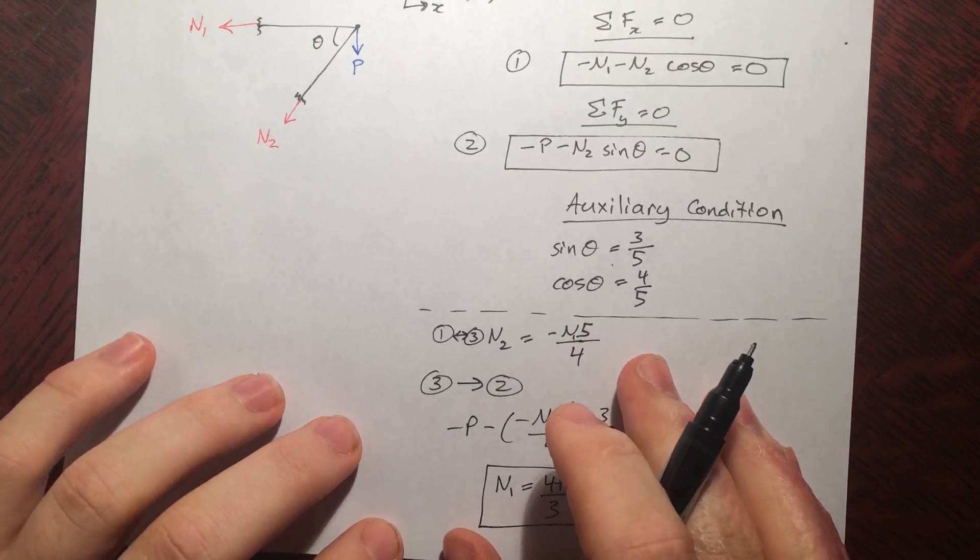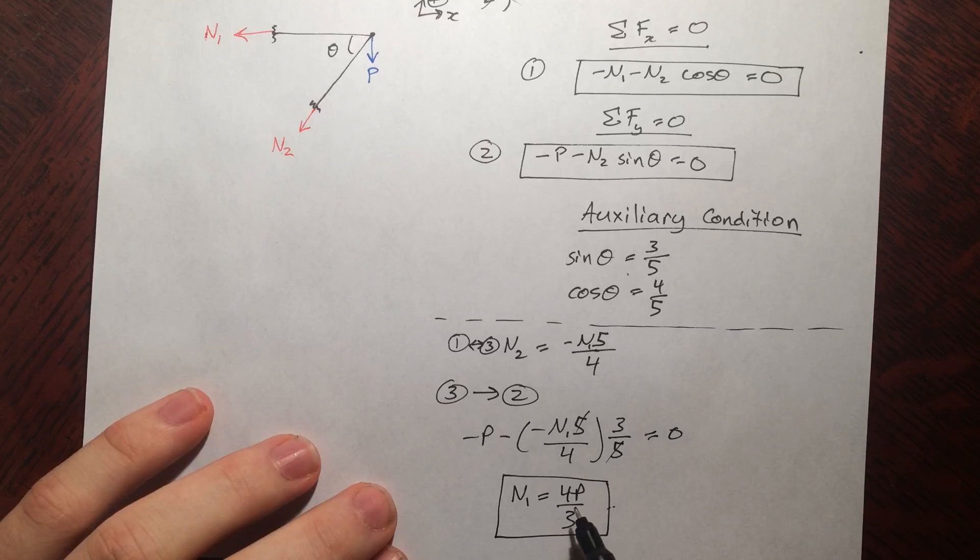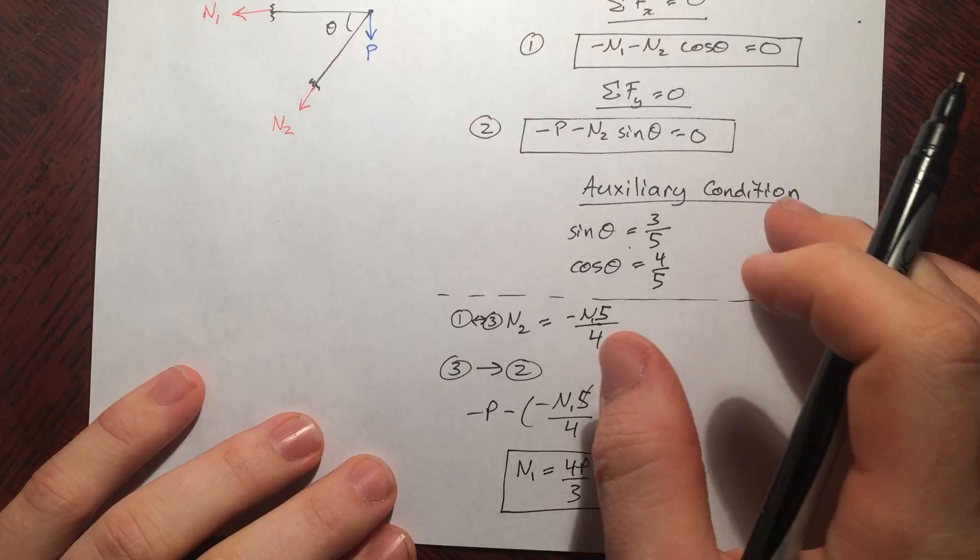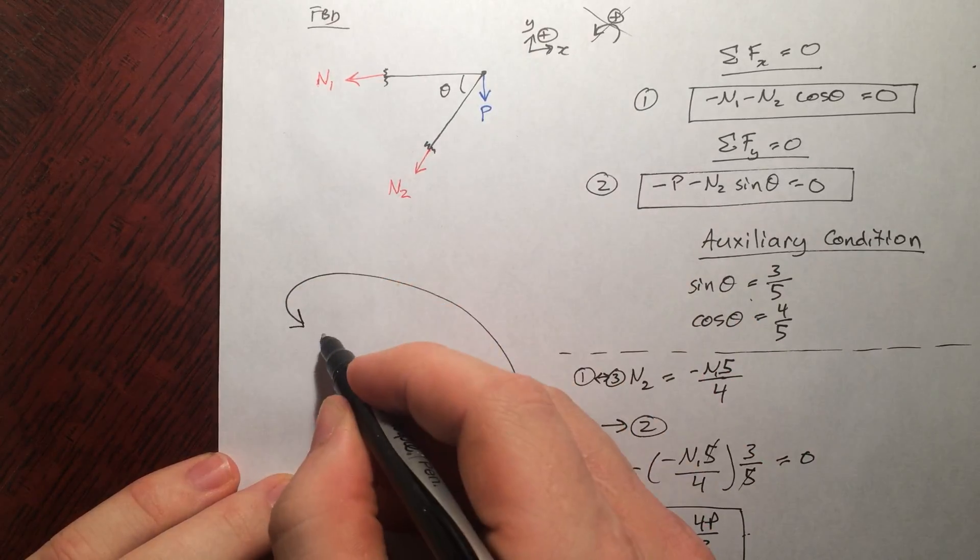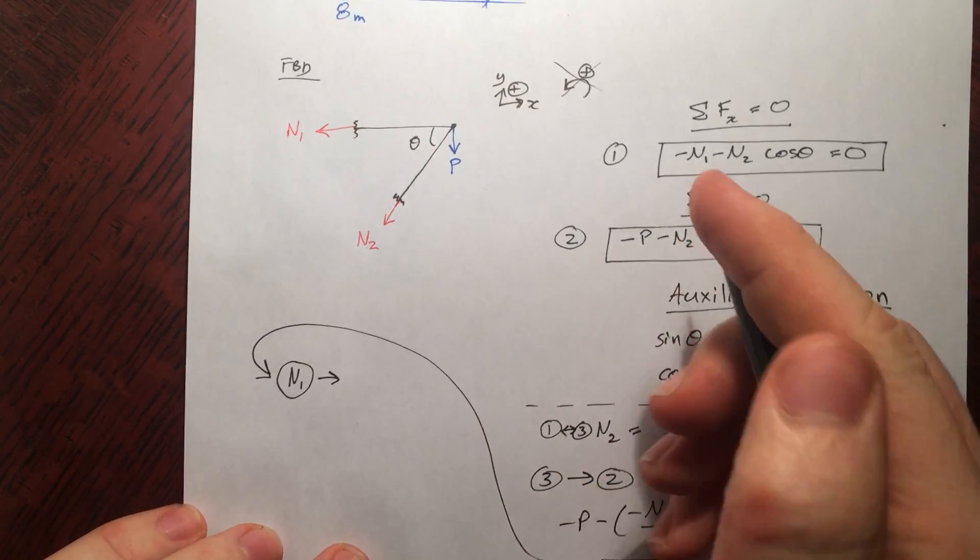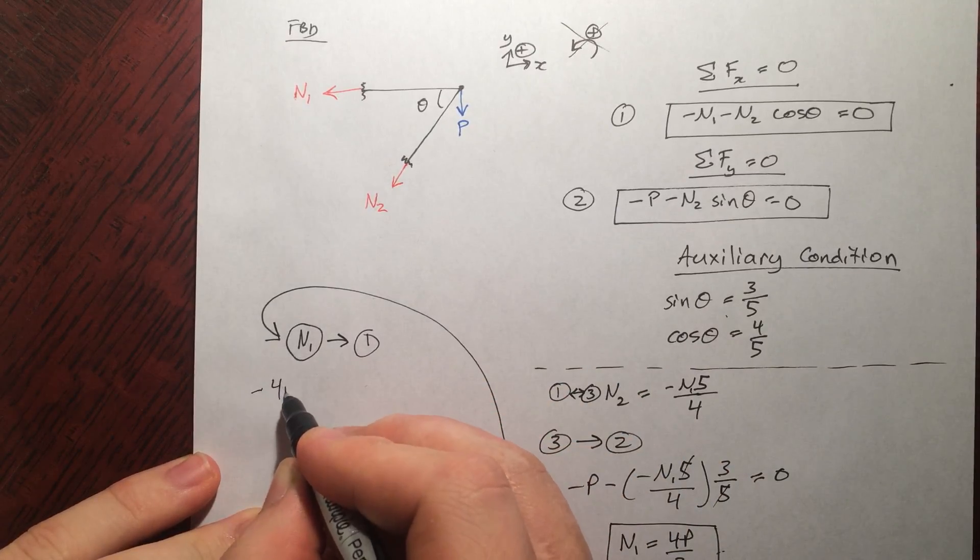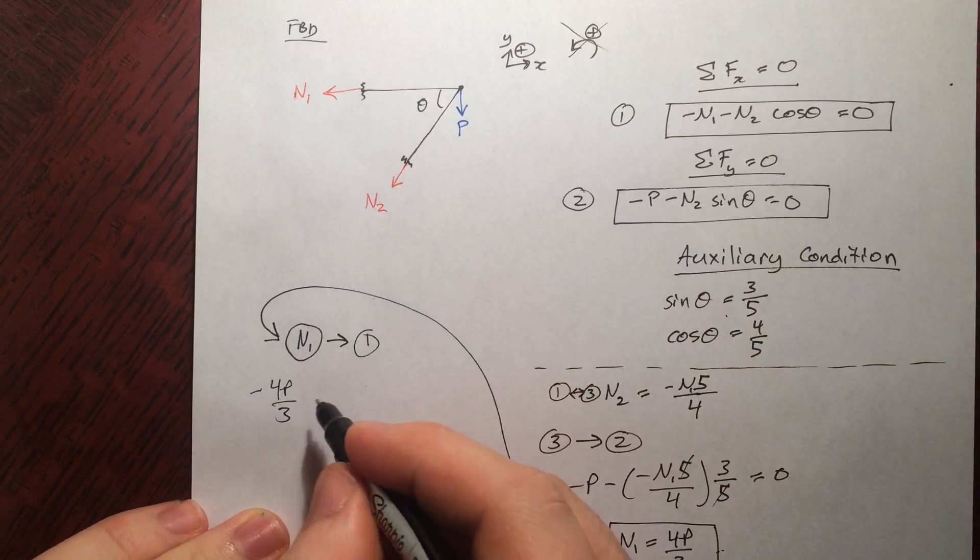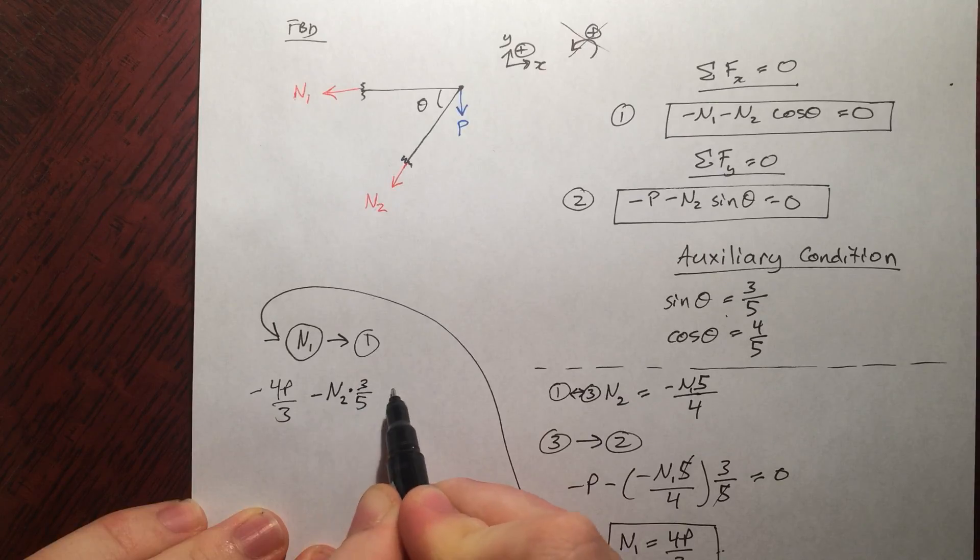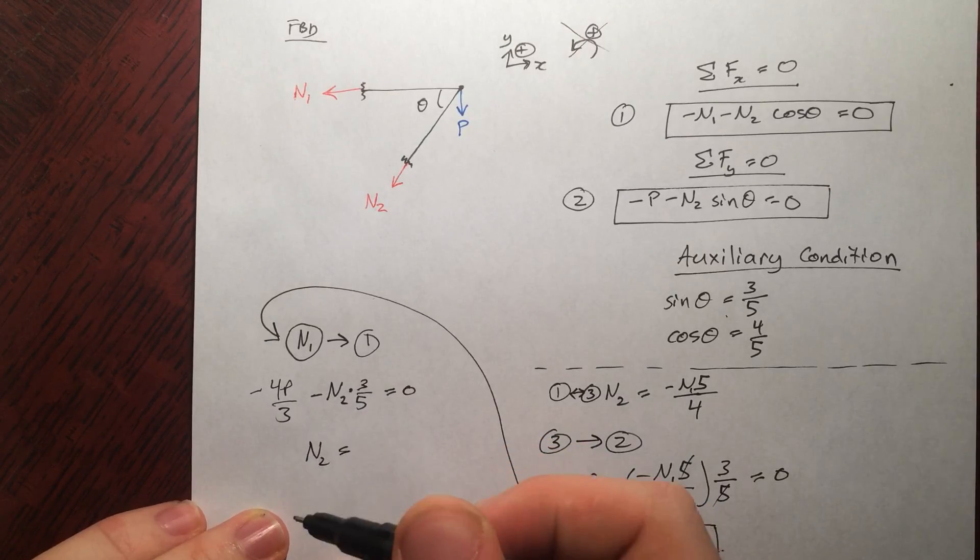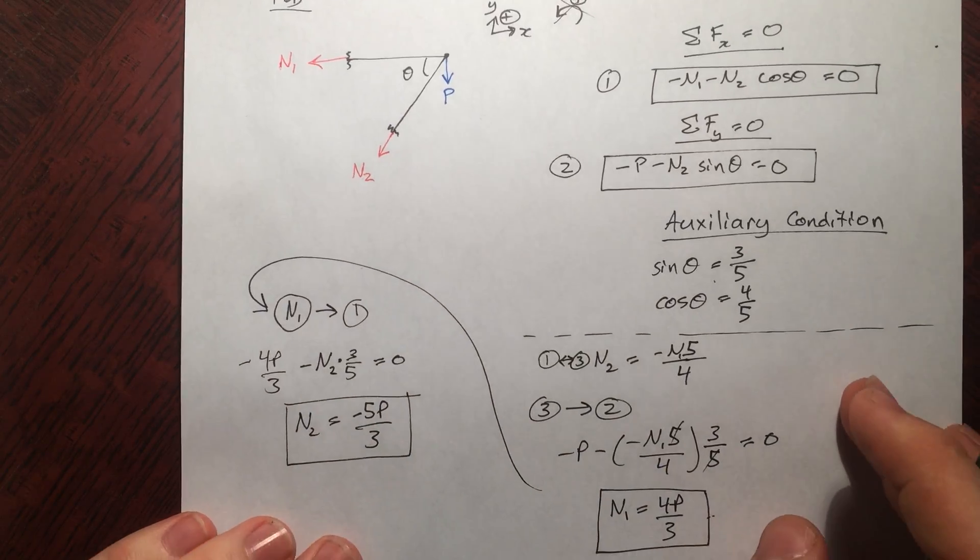And we don't know what P is. You'll find that a lot in Mechanics and Materials because it'll be asking you what's the maximum P if the maximum, let's say, normal force was something. Okay. So you've got to get used to solving equilibrium equations in terms of an unknown. Okay. Now we take N1. Alright. So let me just go up over here. N1. Plug that guy back into number 1 here. And then we can just solve for N2. We get negative 4P by 3, which was N1, minus N2 sine theta, that's three fifths, equals zero. Some algebra. We get N2 equals negative 5P by 3.